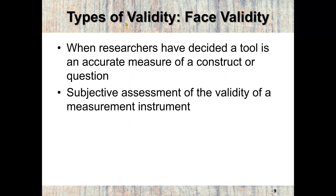We have different types of validity. The first is face validity — when researchers have decided a tool is an accurate measure of a construct or question. It is also a subjective assessment of the validity of the measurement instrument.